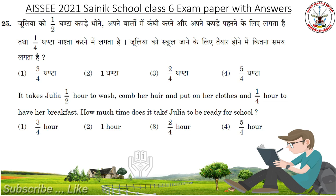It takes Julia half an hour to wash, comb her hair and put on her clothes, and one-fourth hour to have her breakfast. How much time does it take Julia to be ready for school? The answer is 3/4 hour.